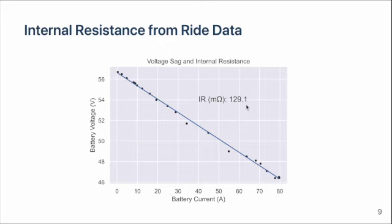The best fit slope of this line provides a measurement of the internal resistance. In this case, for my 14S5P weldless battery, I'm getting about 130 milliohms.